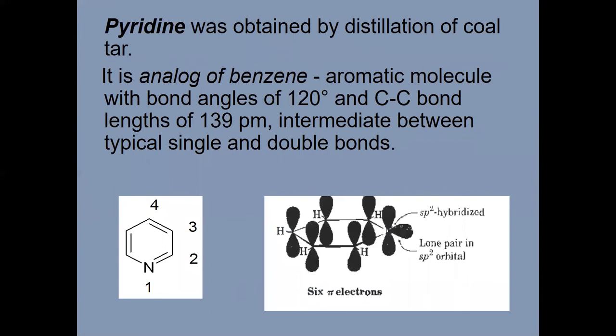Pyridine was obtained by distillation of coal tar. It is an analog of benzene with six pi electrons and sp2 hybridization of carbon atoms.